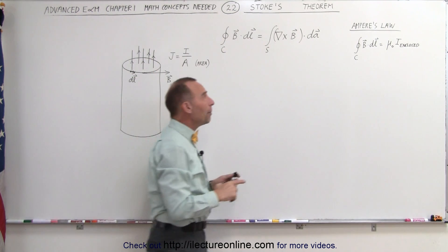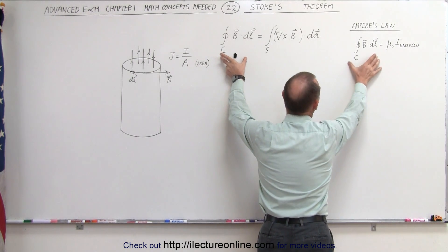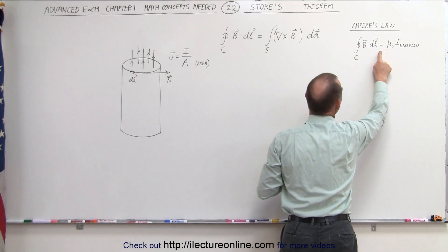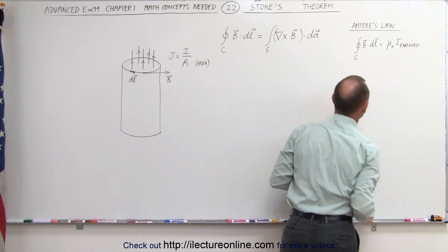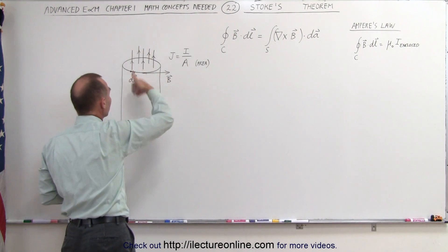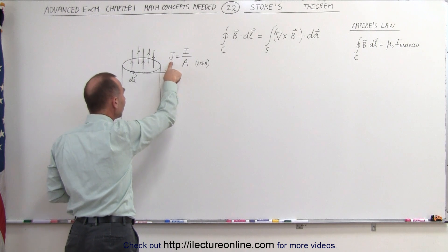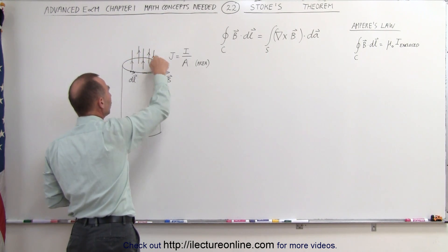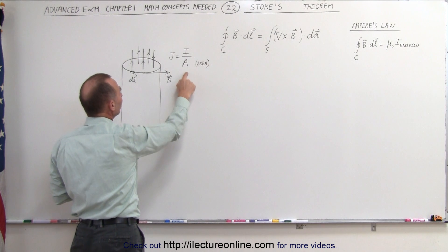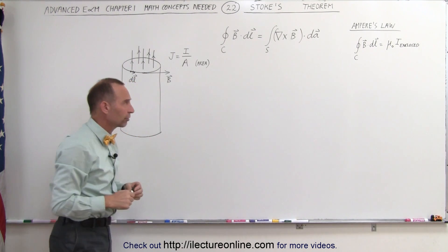We also know Ampere's law. Notice that the left side of the equation is equal to the left side of Ampere's law, and we know that that is equal to mu sub naught times the current enclosed. Now, let's say that we have a certain amount of current here. The current density is going to be equal to the total current through this conductor divided by the cross-sectional area of that conductor.